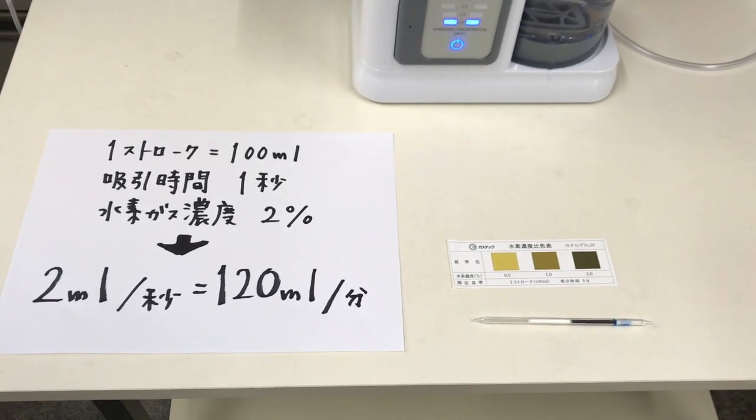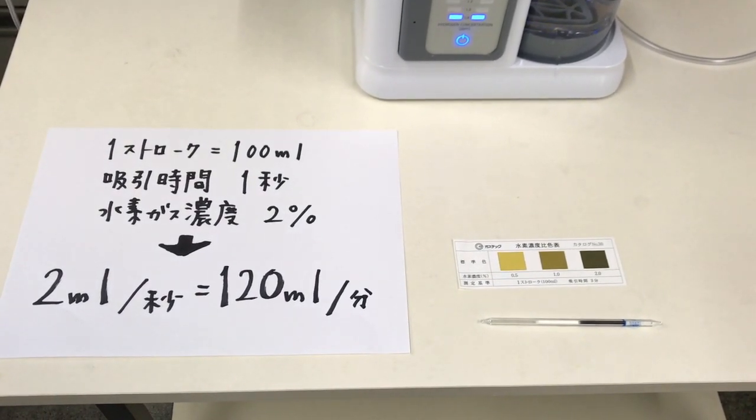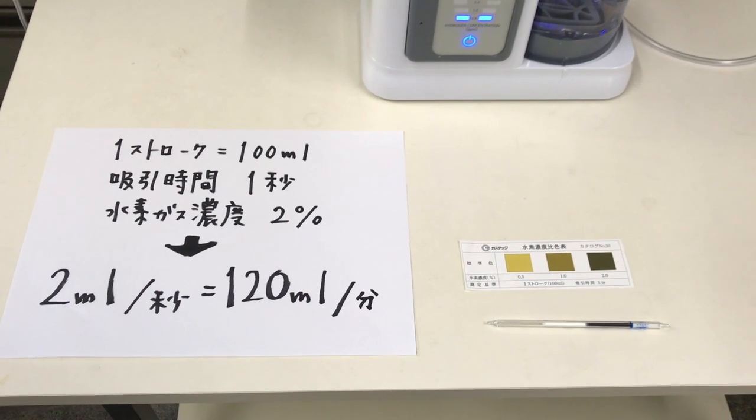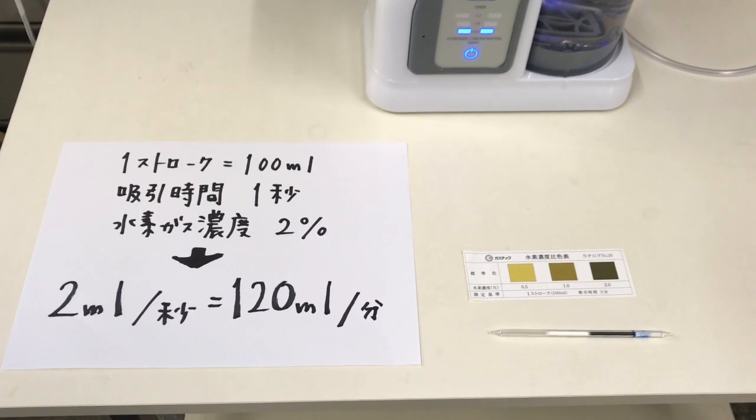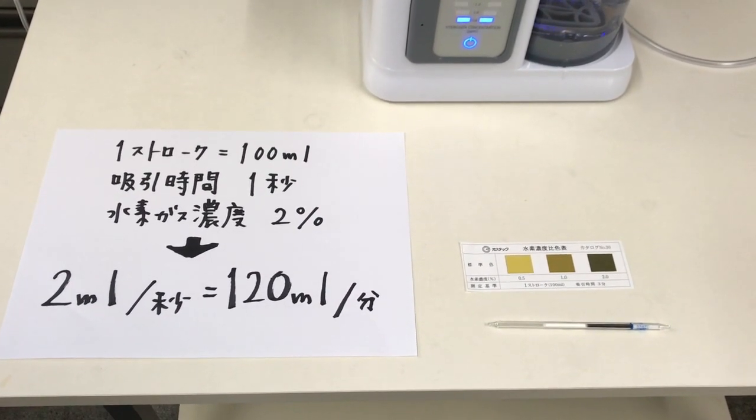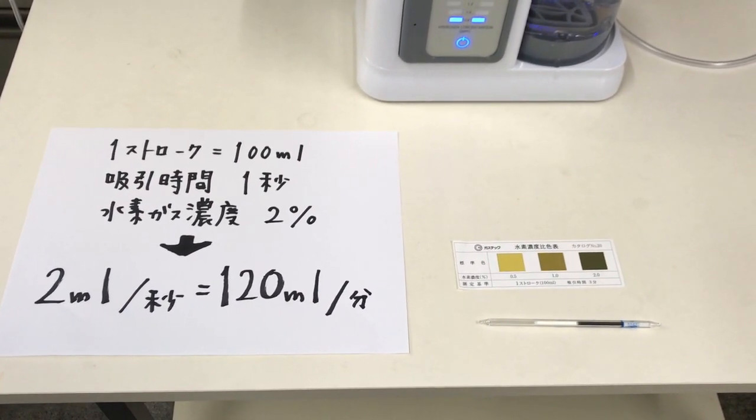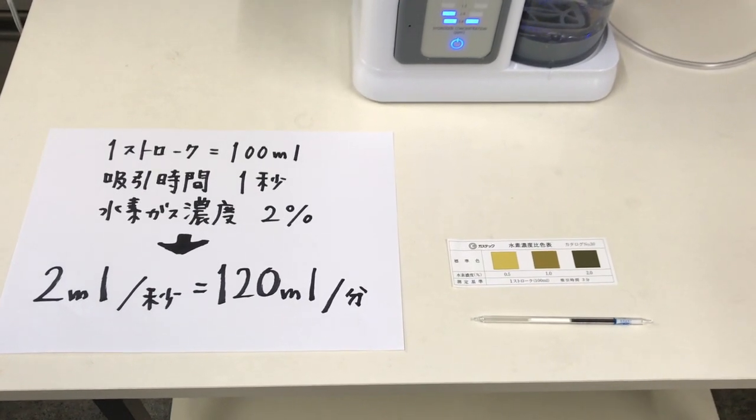What you're looking at is at least 120 milliliters per minute or greater, which is right there around therapeutic grade. And the important part is that you're getting really clean hydrogen. You know it's safe, you know the levels are correct, and that's how you do a proper test.